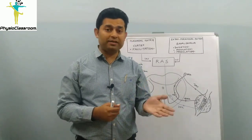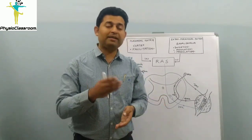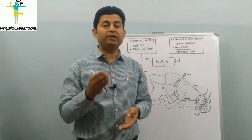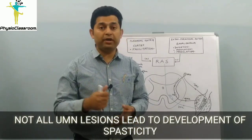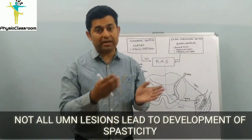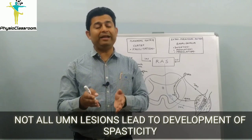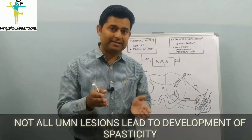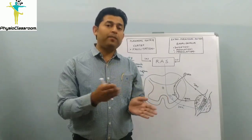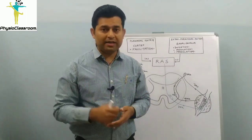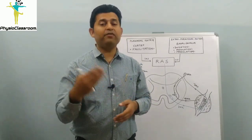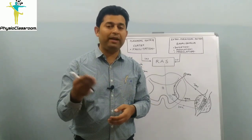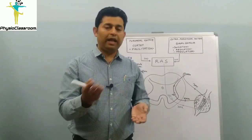As we all know, spasticity is seen in upper motor neuron lesions. But at the same time, it is also interesting to note that all upper motor neuron lesions do not lead to spasticity.